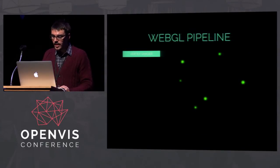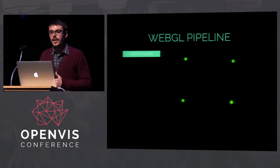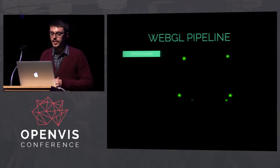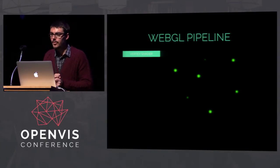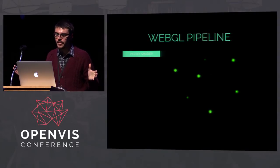A vertex shader is like a callback that receives your array of floats one by one and returns one float — a one-to-one mapping. It's used to transform, rotate, or scale points. The fragment shader is another callback called for each pixel on screen, deciding which color that pixel will be. This would be super costly if not done in parallel — which is why you use the GPU. So you write a file doing one-to-one mapping of points to transformed points, and another callback deciding each pixel's color.